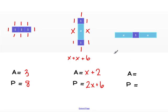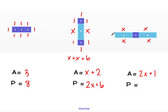Looking at our third and final shape, we can look at area first by counting how many of each tile we have. We have 2 x tiles, so we call that 2x. And we have 1 unit tile, so 2x plus 1. Then we label our side lengths for perimeter: x, x, x, and x, and the ones are 1's. So we have 4 x's and 4 ones, giving us a perimeter of 4x plus 4.